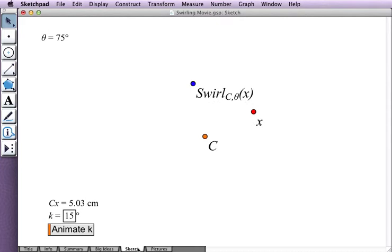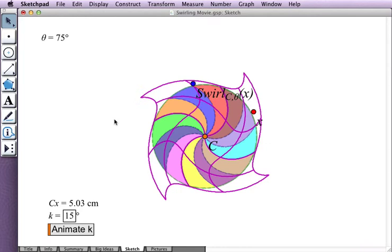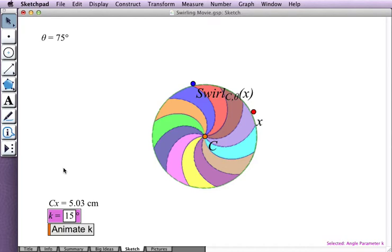So I copy the picture, paste it onto point C, and swirl it, and I get to see what the swirl looks like for different values of K.